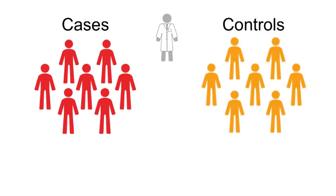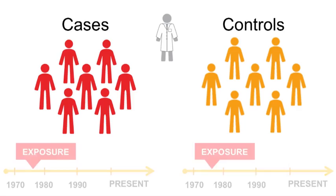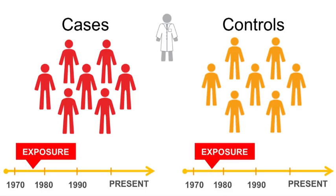Researchers also select a group of individuals without the disease, known as controls. In contrast to the cohort study design, in case control studies, subjects are selected because they either have the disease of interest — i.e., a case — or they do not — i.e., the control. Case control studies proceed logistically from effect, i.e., the disease or health outcome, to the cause, the exposure of interest, as researchers look back in time to see what the exposure was in both the case group and the control group.